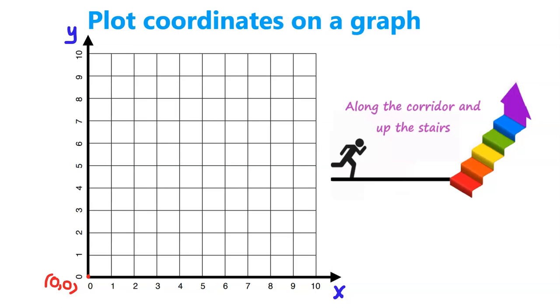Okay, the last thing I'll mention before we start plotting coordinates on the graph is this: along the corridor and up the stairs. That explains the method of how we'll plot our coordinates.